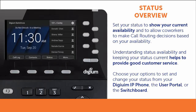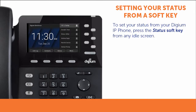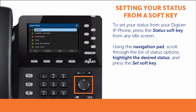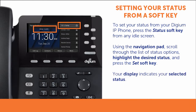You may choose from several options to set and change your status on your phone. To set your status using your phone's soft keys, press the Status soft key from the idle screen. You will be presented with a list of status options. Using the navigation pad, scroll through the list to the desired status option and press the Set soft key. Notice that the display indicates your selected status.